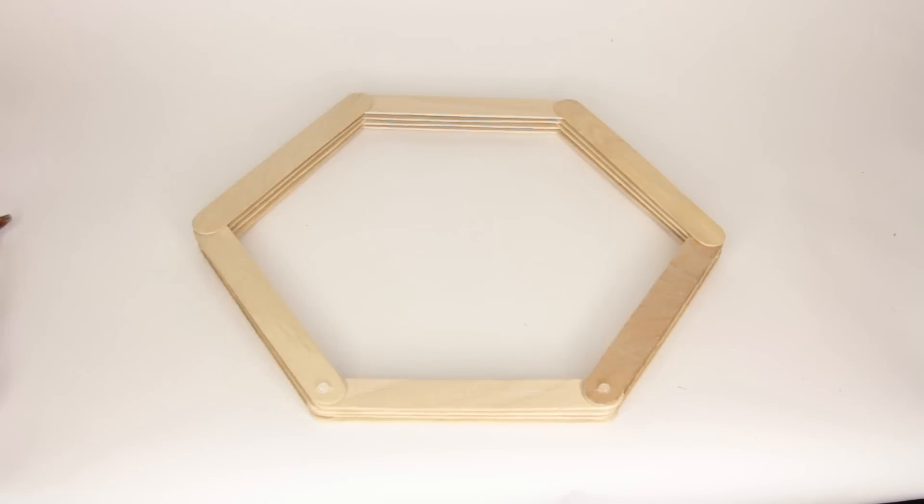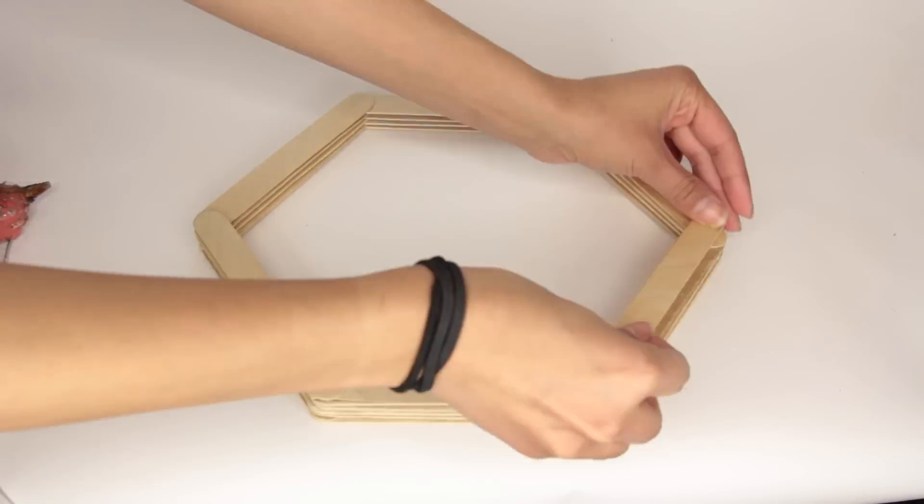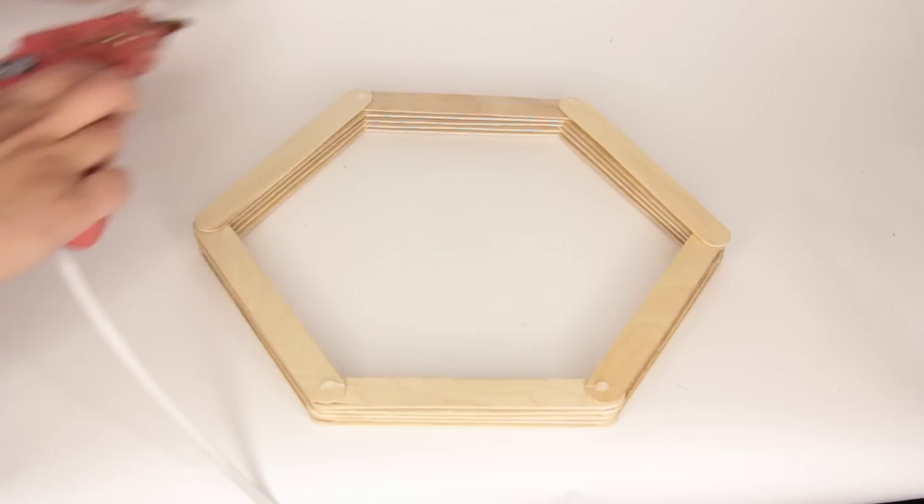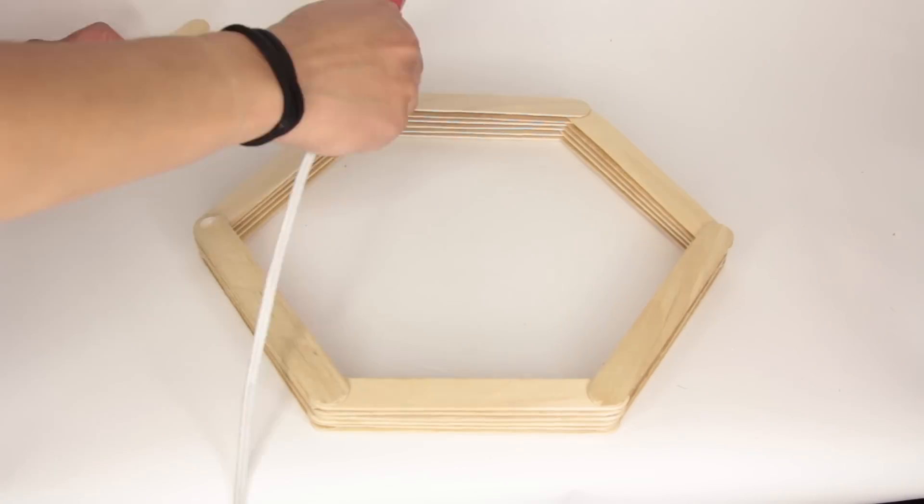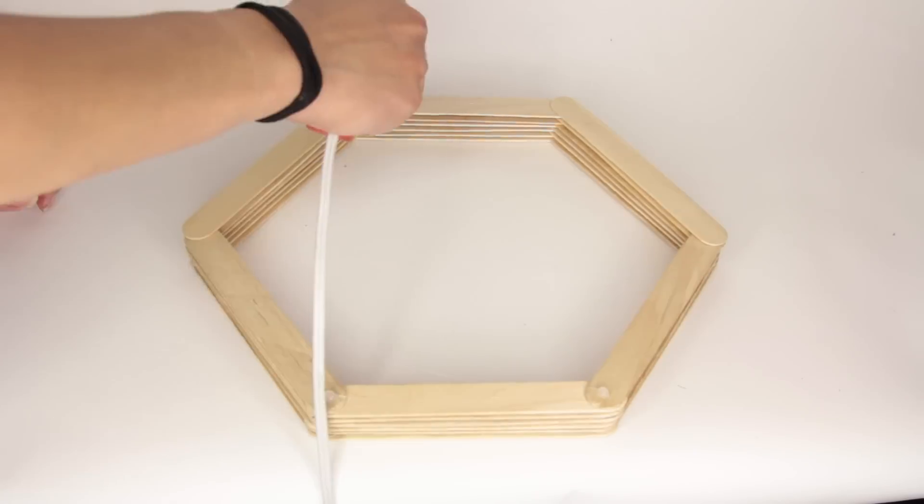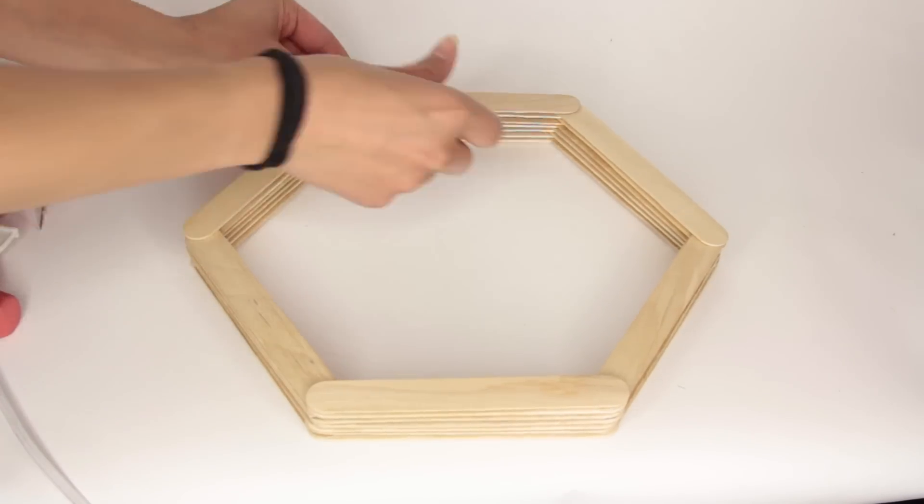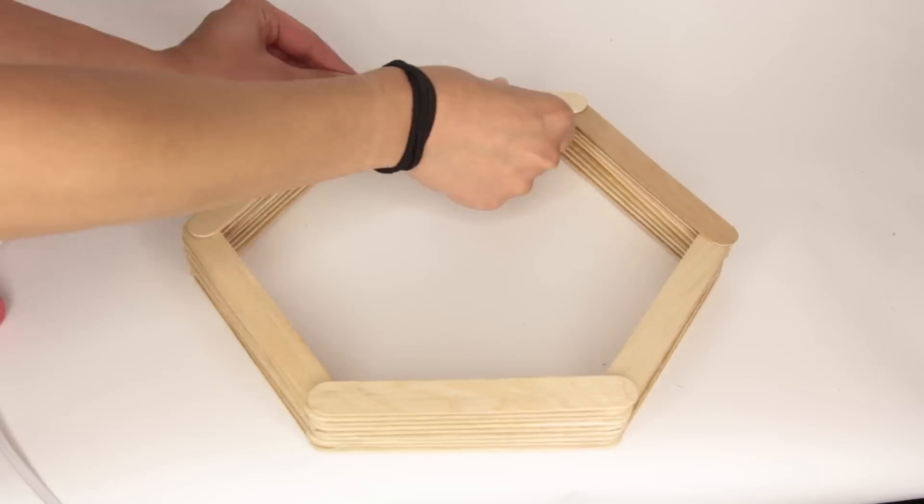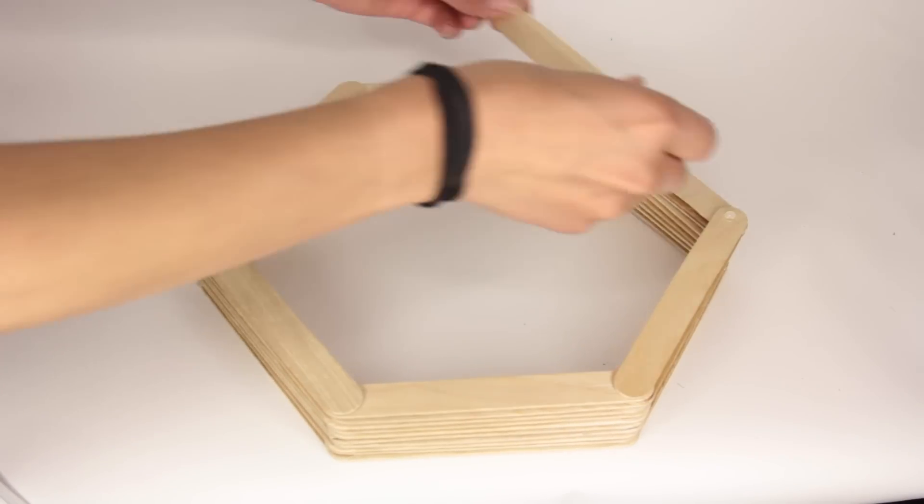You might mess up a couple of times. You can always take the popsicle stick off where you messed up, or you can just deal with it and build on top of that. I used one entire pack of the 60 jumbo popsicle sticks that you buy at Dollar Tree, which are called kraft sticks. If you want thicker shelves, just add another pack of the popsicle sticks to your shelf.